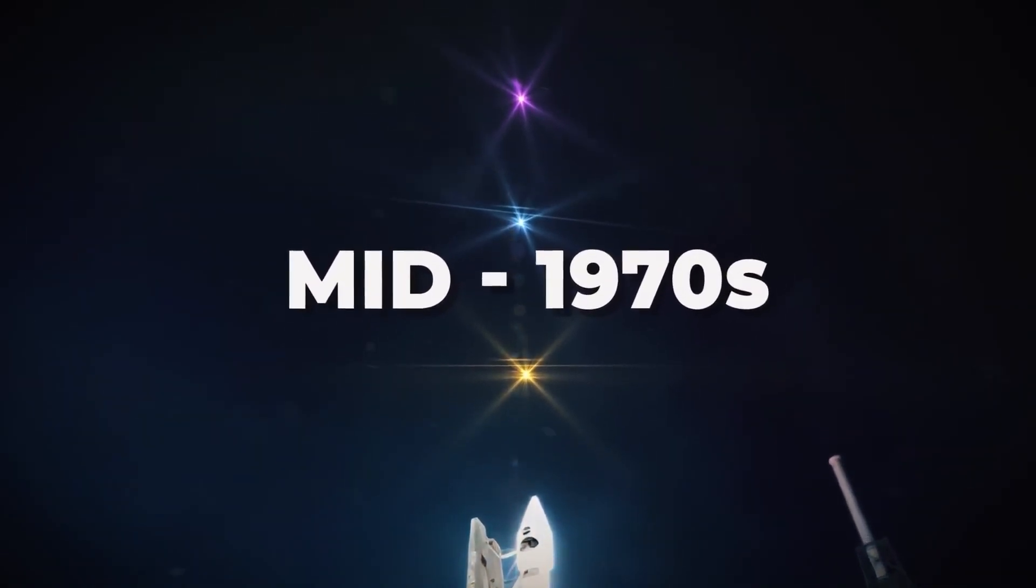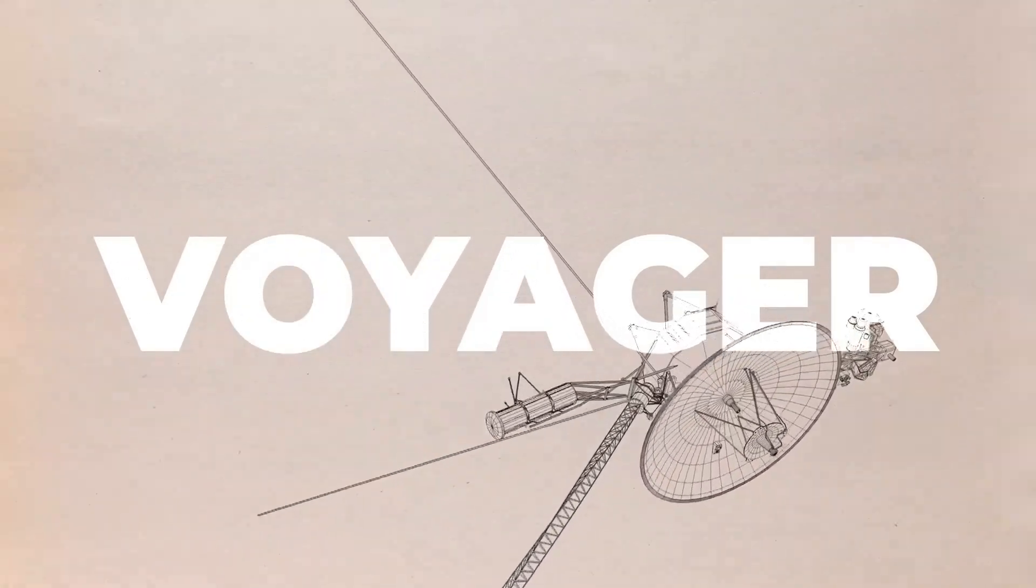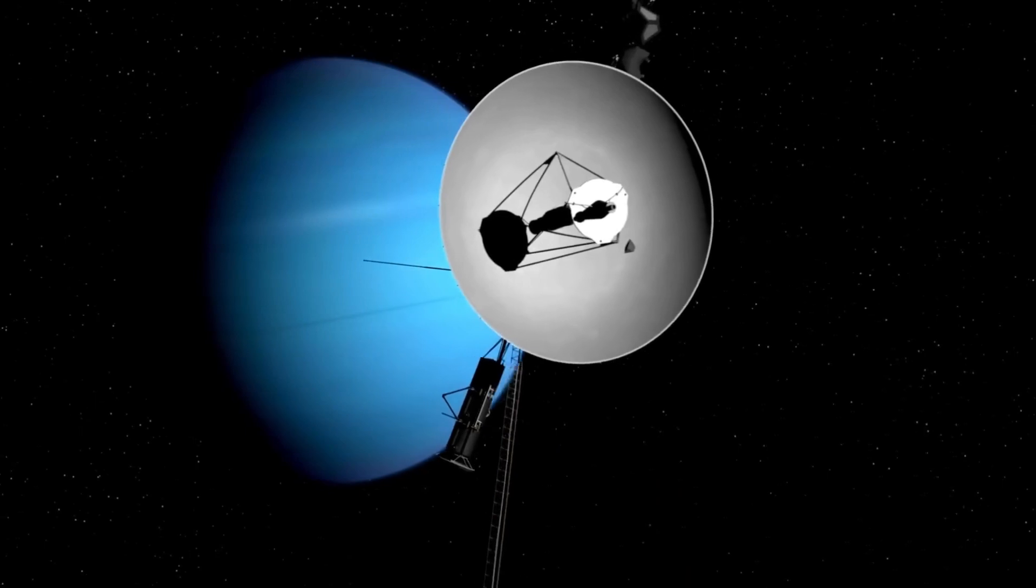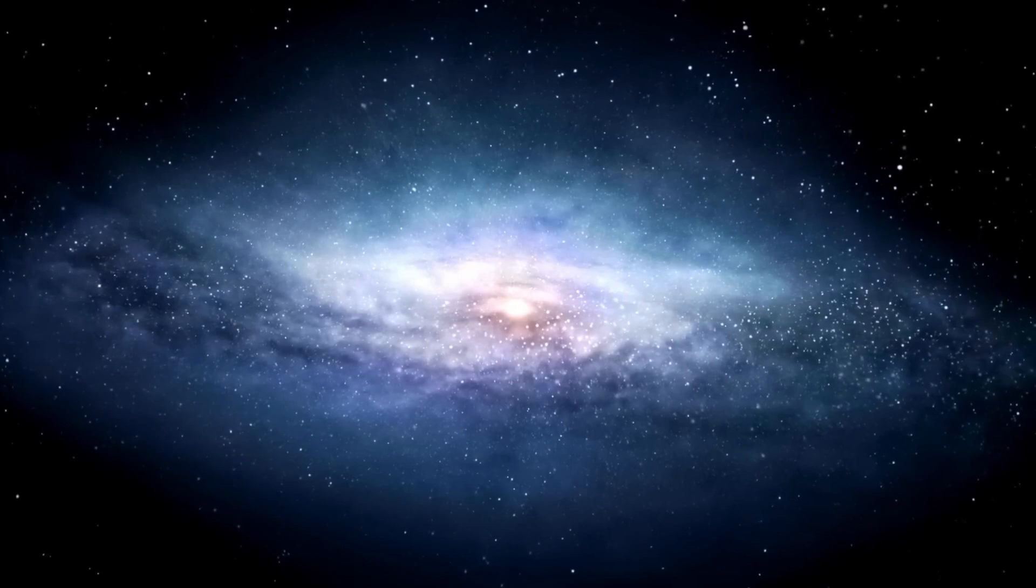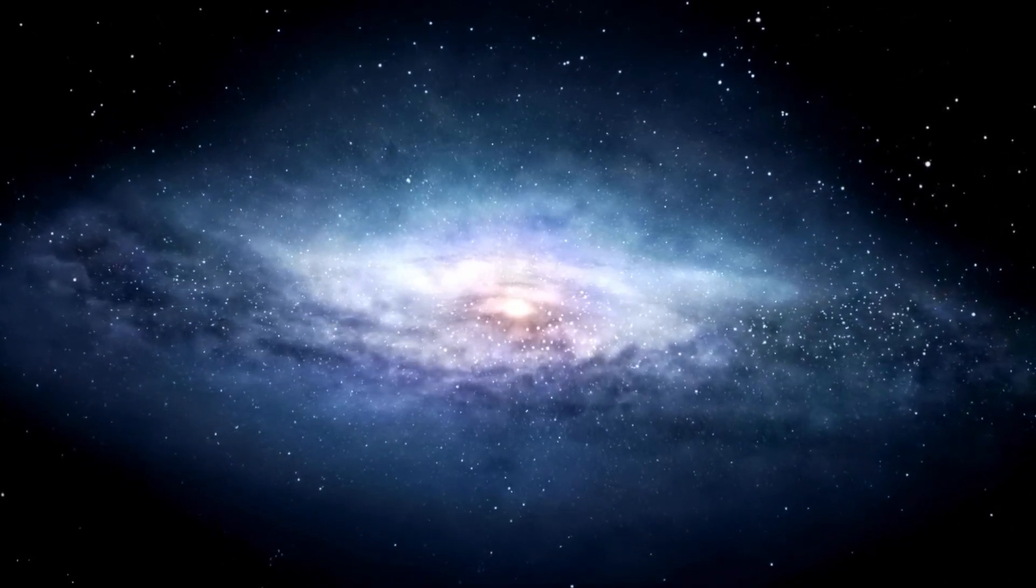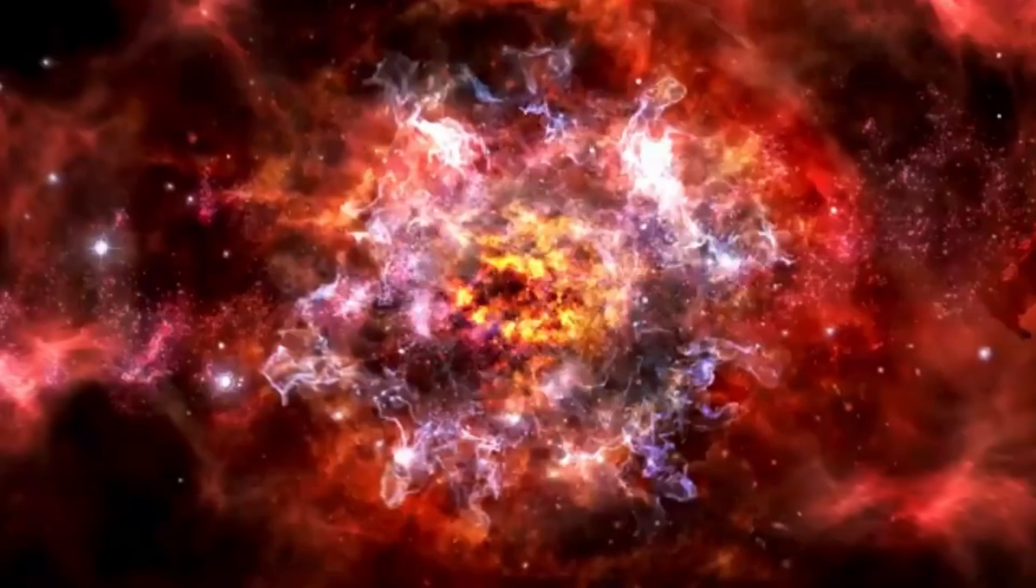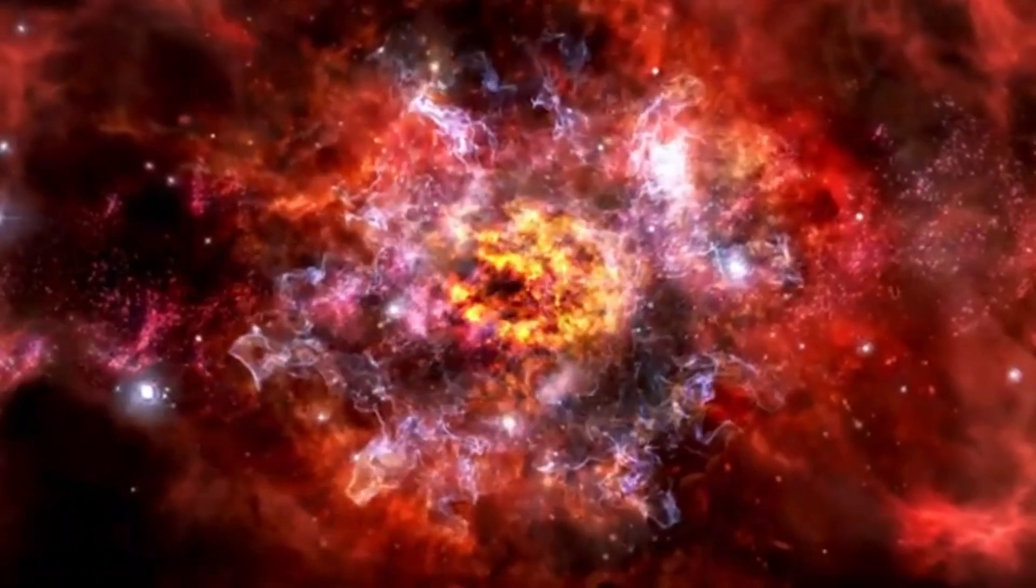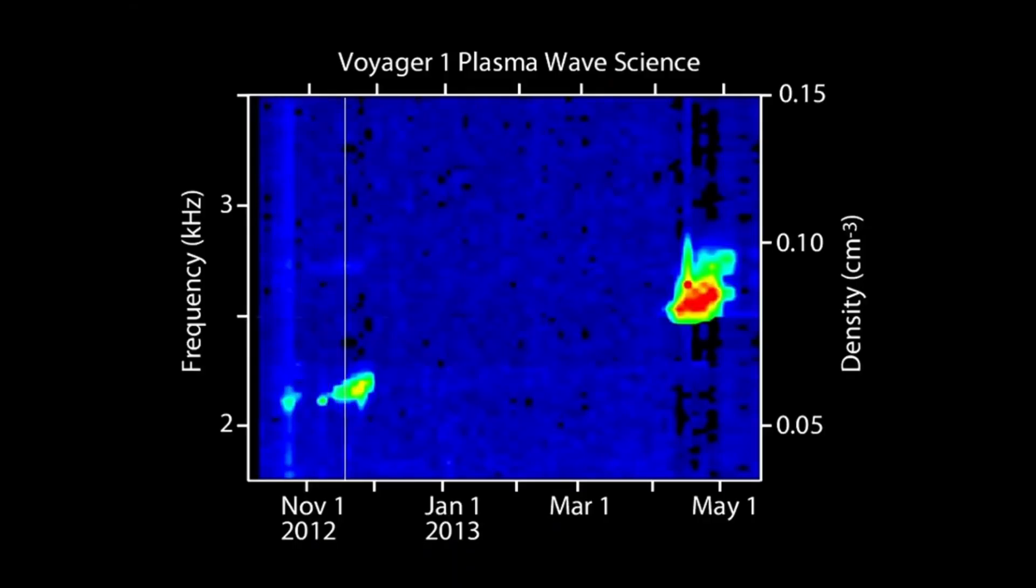Despite these efforts, Voyager 1 may only have a few years, or perhaps a decade left before its dwindling power supply renders its instruments inoperable. When that time comes, Voyager 1 will transition into a silent ambassador, hurtling through the cosmos at 35,000 miles per hour, carrying humanity's message in the form of the Golden Record. This timeless artifact, with its 1970s stamp of human civilization, will endure for billions of years, outlasting even the planet it originated from. A testament to human ingenuity and perseverance.